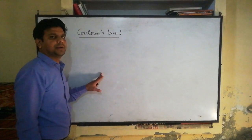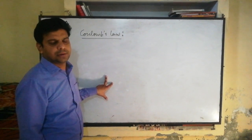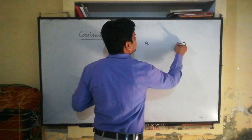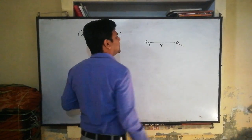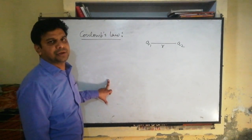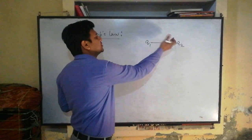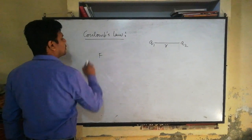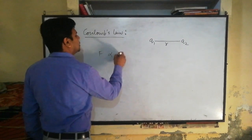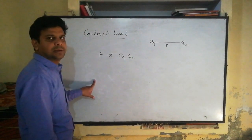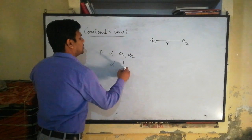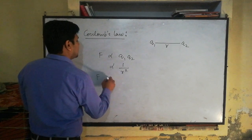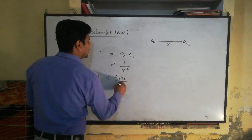This law gives the measurement of force of attraction or repulsion between two point charges. Consider we have two charges Q1 and Q2, with distance R between them. The force of attraction or repulsion depends upon the nature of charges, whether they are positive or negative. The force is directly proportional to the product of the charges, Q1 times Q2, over R squared.